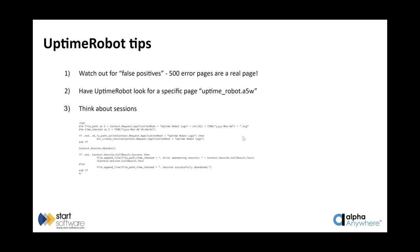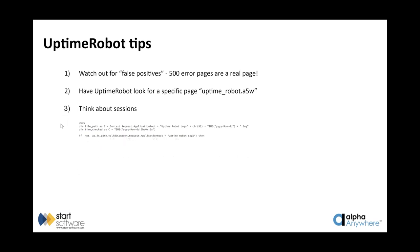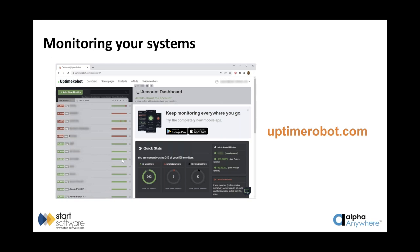Don't just point Uptime Robot at your login page — that's not a bad start, but think about creating a dedicated page like we have that does useful checks. Uptime Robot also reports how quickly the test responds, so you can spot general latency problems on on-premise or cloud servers. The stats are retained for years, so if a client says the system's been unreliable, you can look back over one, two, or three years and show them 99.99% uptime.